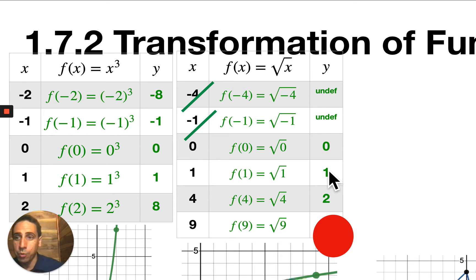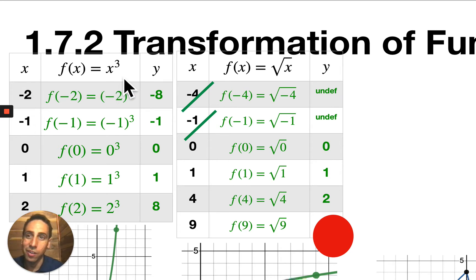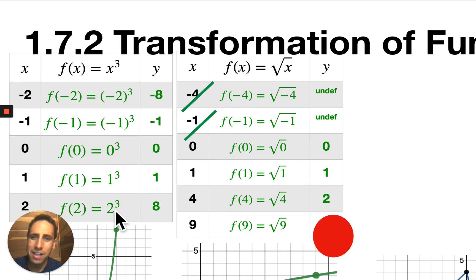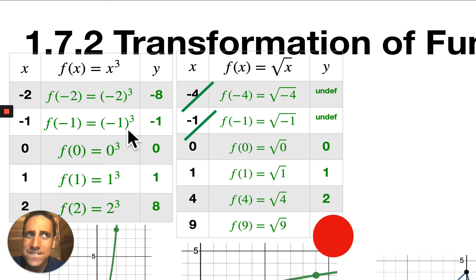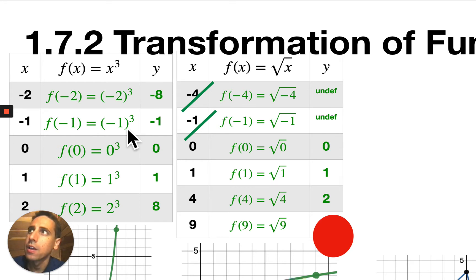I've got a new function here. The rule is: take the input and multiply it by itself three times — not just two times, three times. Let's see what happens. Maybe the positive numbers will be easier. So we start with positive two: multiply it by itself three times, two to the third power, that is eight. One times itself three times is one. Zero times itself three times is zero. Negative one times itself three times — that's negative one times negative one times negative one. Two of the negatives will cancel out, but you're still left with one of them, so the output's going to be a negative number. Negative two times negative two is positive four, and then times negative two again is negative eight.